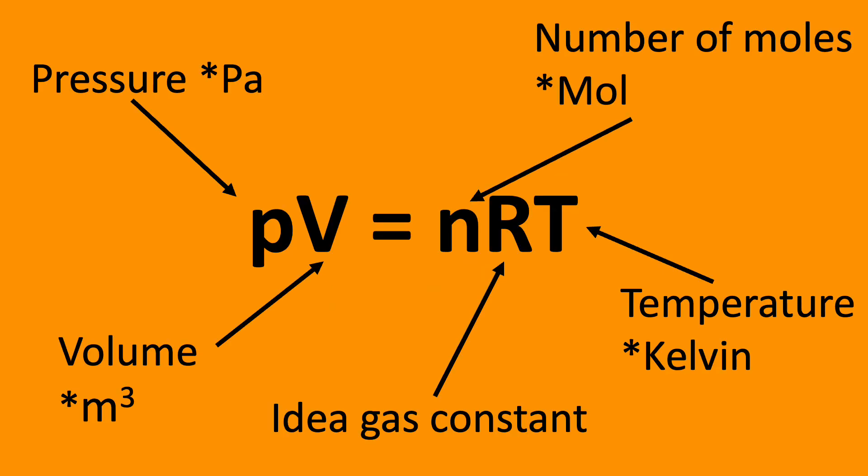Ideal gas law: PV equals nRT. It is possible to calculate the missing value if you have four out of the five variables and the equation can be rearranged. It's important to note that the pressure is in Pascals and this is usually documented in kilopascals which is a factor of a thousand greater. Volume is in meters cubed and temperature is in Kelvin.